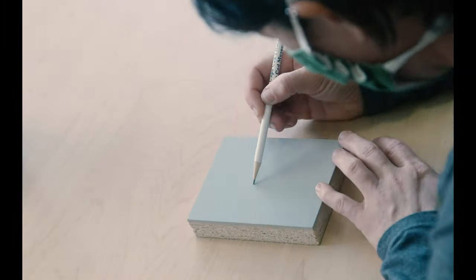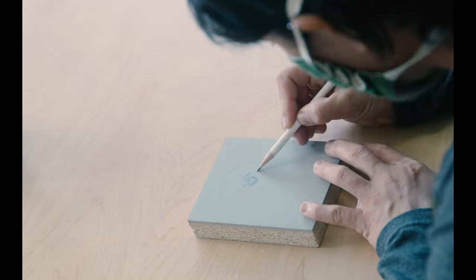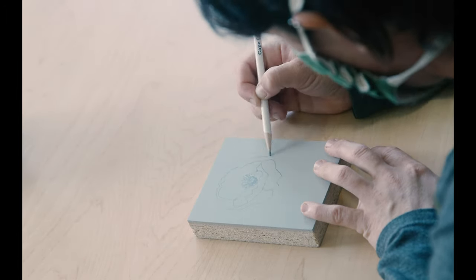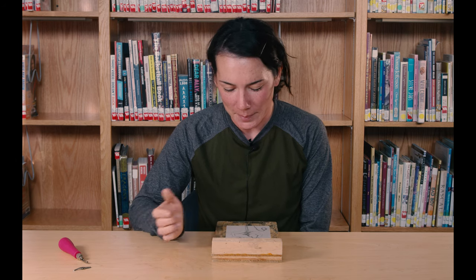The first step is to draw out your design with pencil on your linoleum block. I've gone ahead and drawn a poppy flower on my block here in pencil.